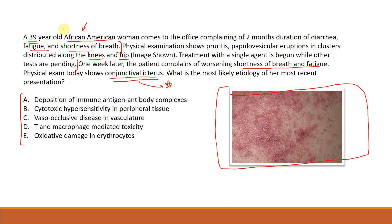She's African-American and is having a hemolytic process after starting a drug that causes oxidative stress. This is glucose-6-phosphate dehydrogenase (G6PD) deficiency — she was treated with a drug that induced oxidative stress, worsening her anemia and causing hemolysis.